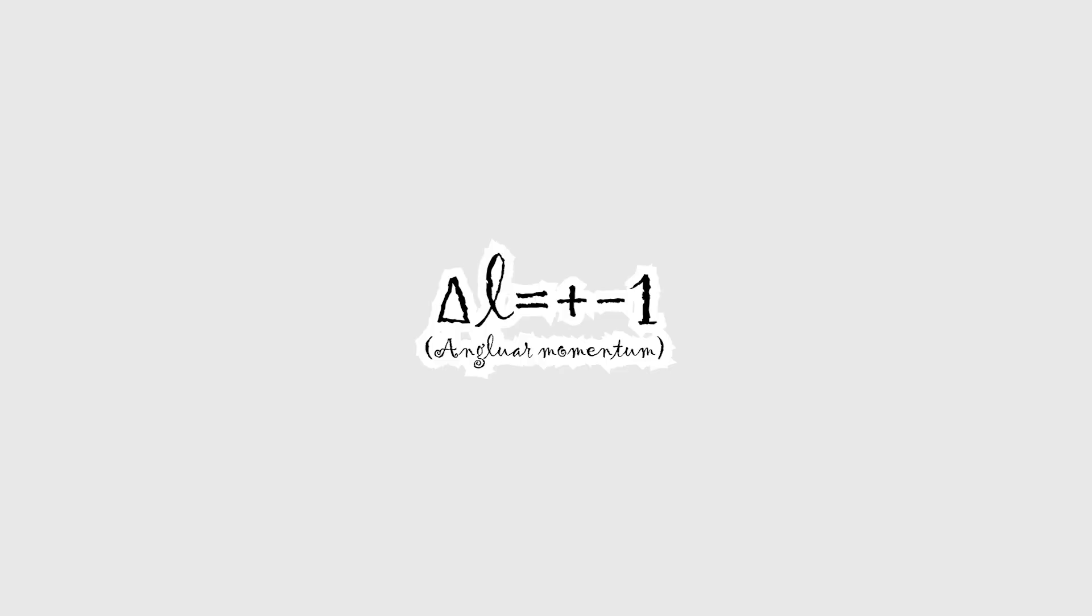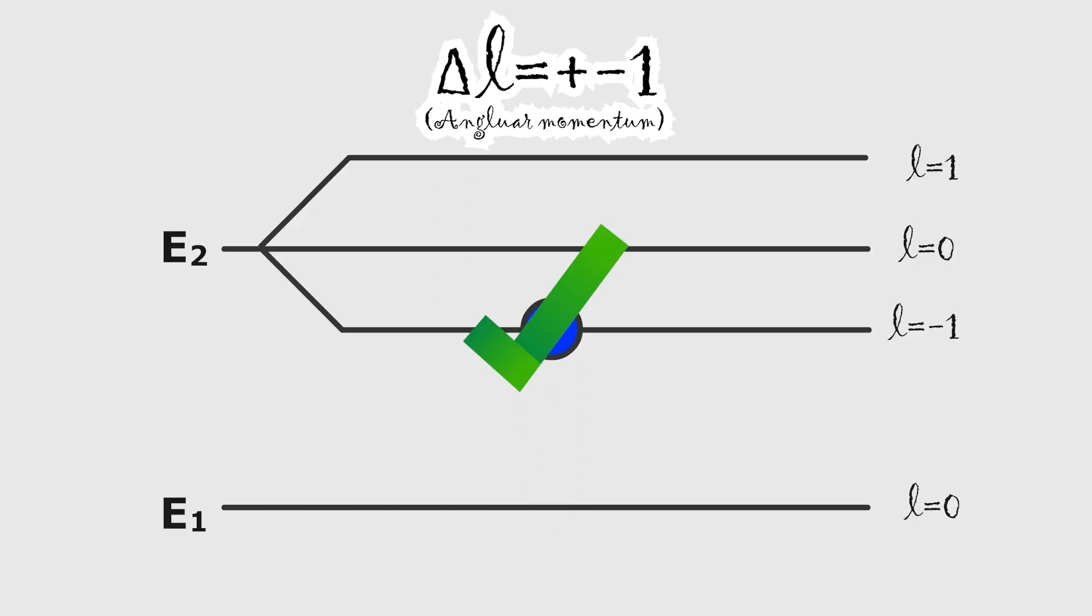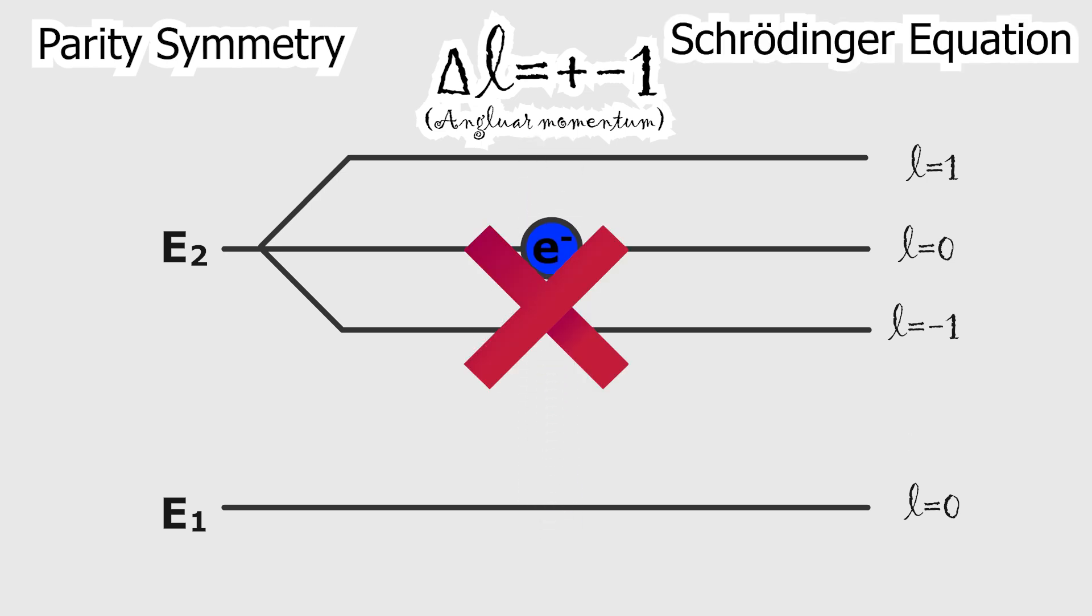The first of these rules states that the angular momentum quantum number of an electron can change by only one unit. This rule arises from the parity symmetry of quantum mechanics. The solutions of the Schrödinger equation and the symmetric properties of the electric dipole operator require the change in the angular momentum quantum number to be one for the transition matrix elements to be non-zero. We understand that this rule is enforced by symmetries.